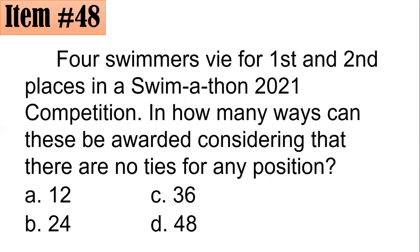Number 48. Four swimmers compete for first and second place in a Swimathon 2021 competition. In how many ways can these be awarded, considering there are no ties? Is it 12, 24, 36, or 48?